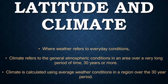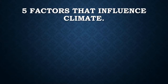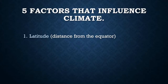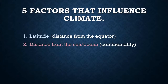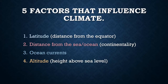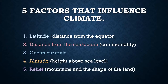There are five factors that influence climate around the world at any given point. These five factors are: latitude, also known as distance from the equator; distance from the sea or ocean, also known as continentality; ocean currents; altitude, also known as height above sea level; and relief, also known as mountains or shape of the land. No single factor is responsible for the climate of a place, but it is easier to examine them one at a time, in isolation.